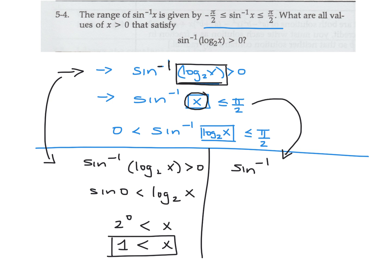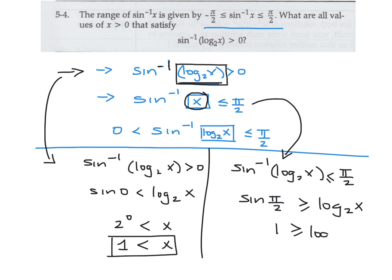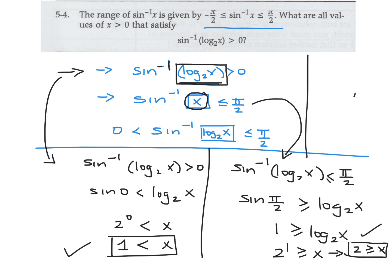Now let's use the upper bound. The log base 2 of x is less than or equal to pi over 2. By the same principle, sin(pi over 2) equals 1, so 1 is greater than or equal to log base 2 of x. Therefore, 2 to the power of 1 is greater than or equal to x, meaning x is less than or equal to 2. Combining both results: x is greater than 1 and less than or equal to 2. That is the range they're looking for.